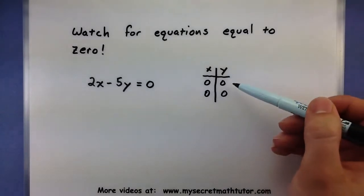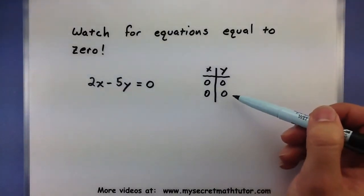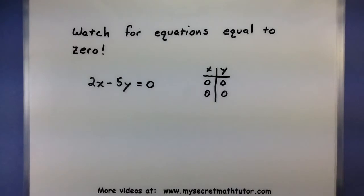Now this is a problem because the point 0, 0 is the same as this point 0, 0, and I need two points in order to do the entire line.